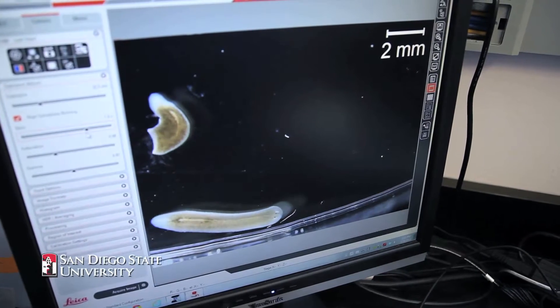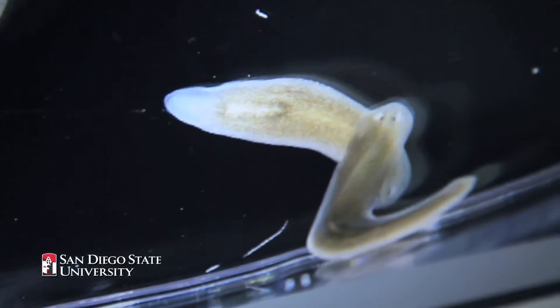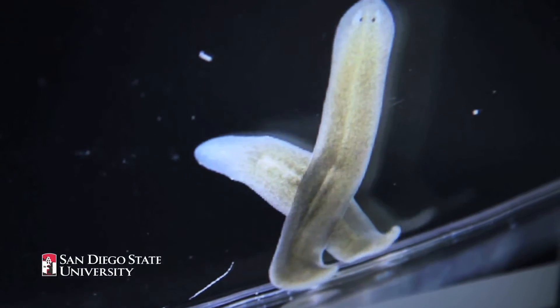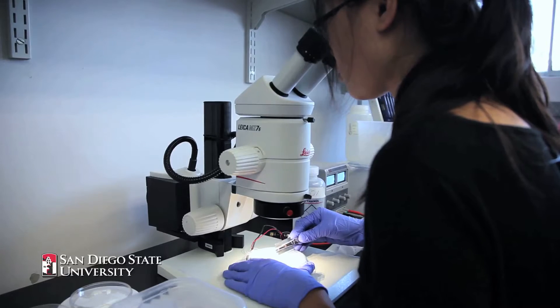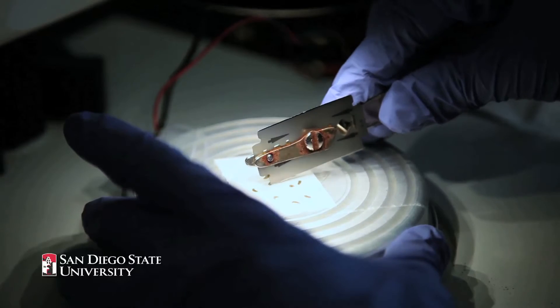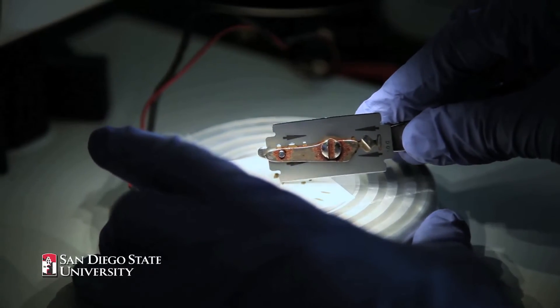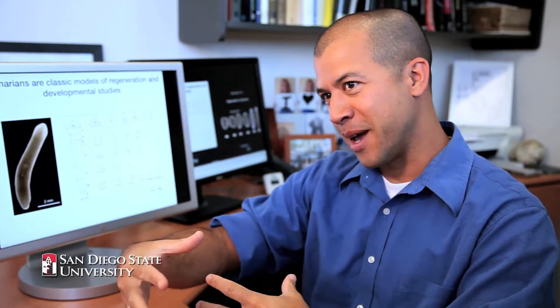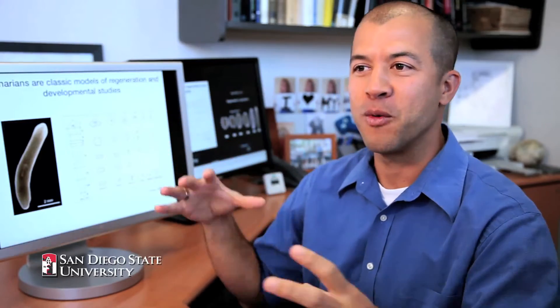The reason they're able to do that is that Planarians maintain a population of special cells called stem cells, which we find in many animals, including ourselves. A stem cell is a cell that can make more copies of itself, and it can also make any other cell type in the Planarian's body. So when we cut the Planarian, these cells dramatically divide and begin to make the different cell types missing in the animal, and they make the worm right back.